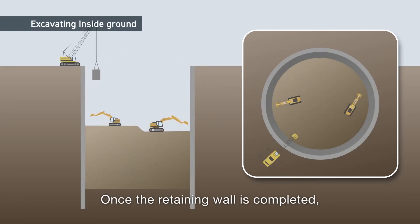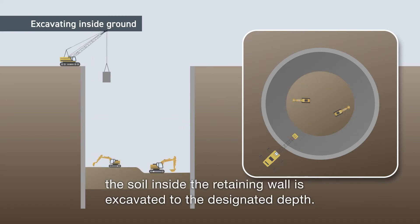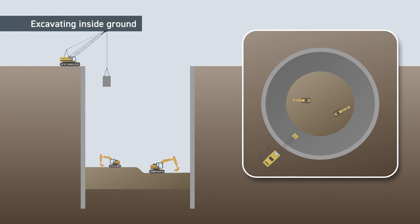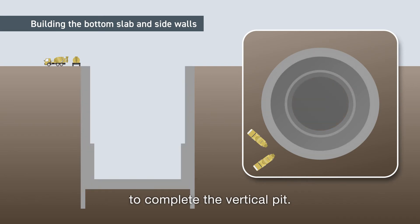Once the retaining wall is completed, the soil inside the retaining wall is excavated to the designated depth. After the excavation, the bottom slab and side walls are built with reinforced concrete to complete the vertical pit.